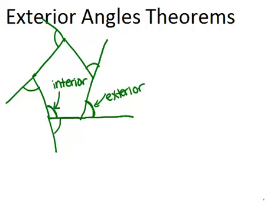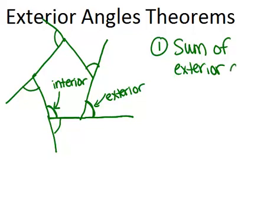This is one of the first theorems. The first theorem says the sum of the exterior angles is always 360 degrees. And this is for any polygon, not just a pentagon.